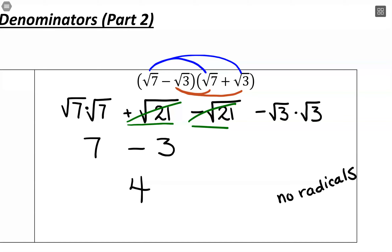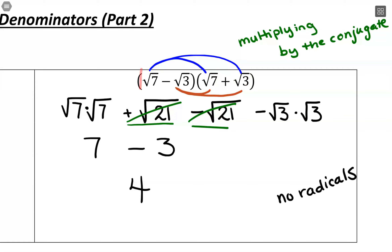What we're doing here is called multiplying by the conjugate. The conjugate is the idea of having the same numbers but a different sign between them. So if we started with square root of 7 minus square root of 3, the conjugate uses square root of 7 and square root of 3 but with addition. Multiplying by the conjugate uses the difference of squares so that all the radicals go away.